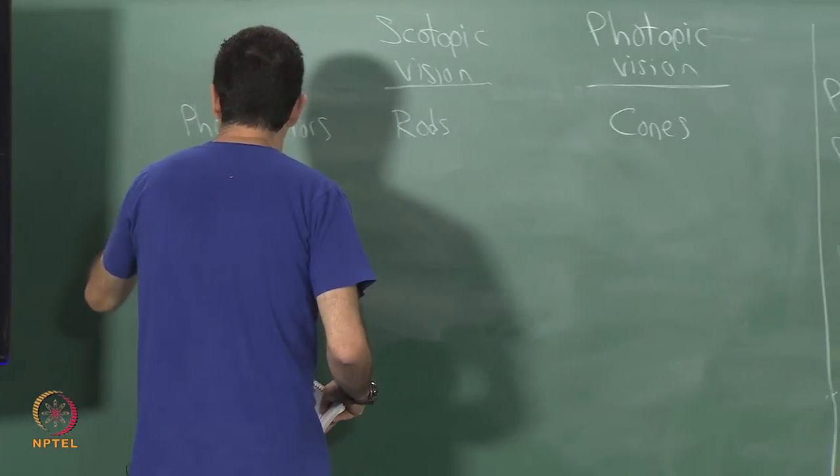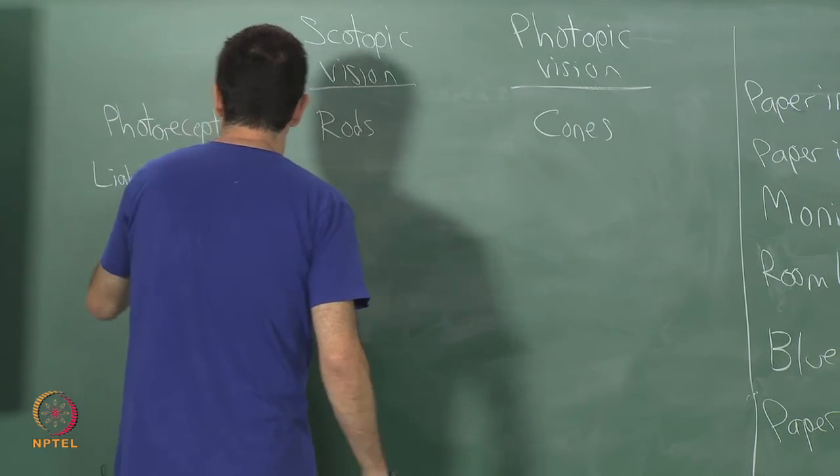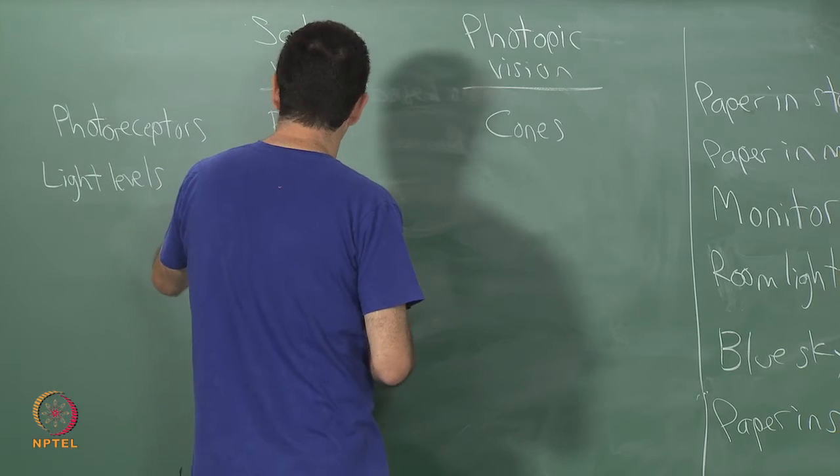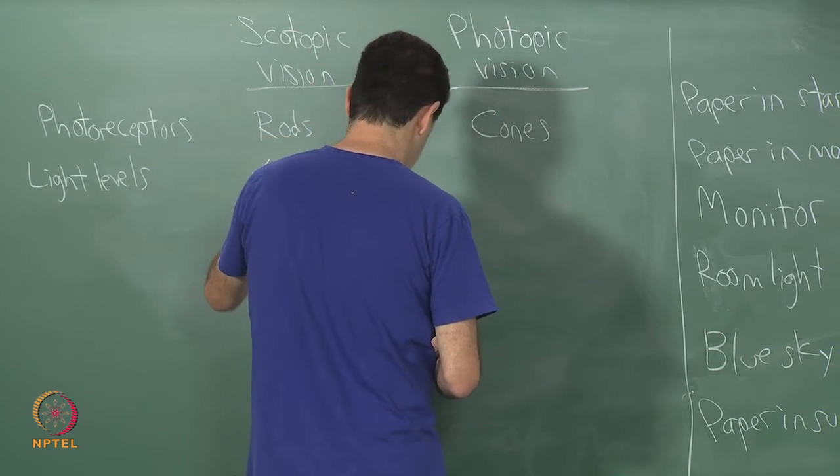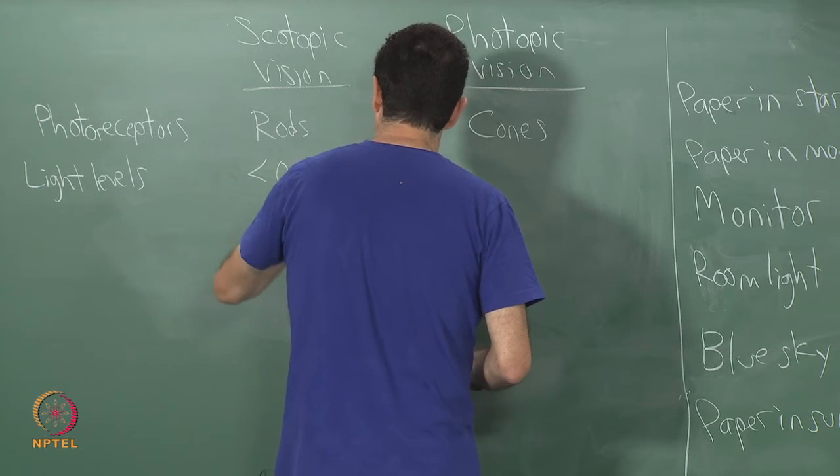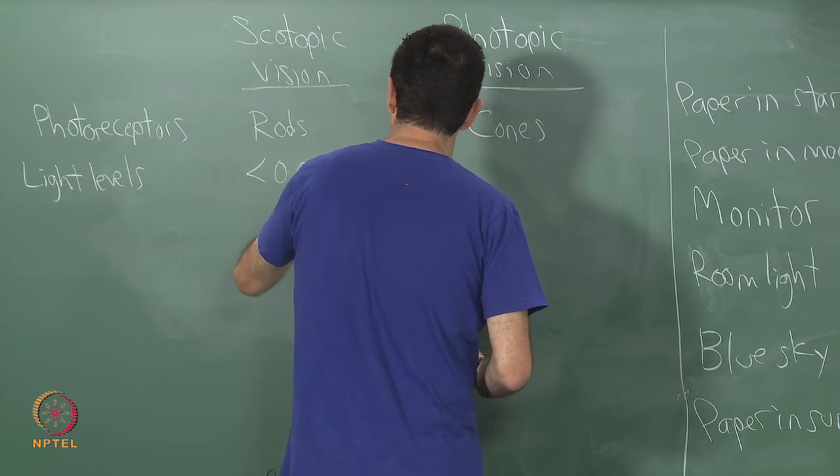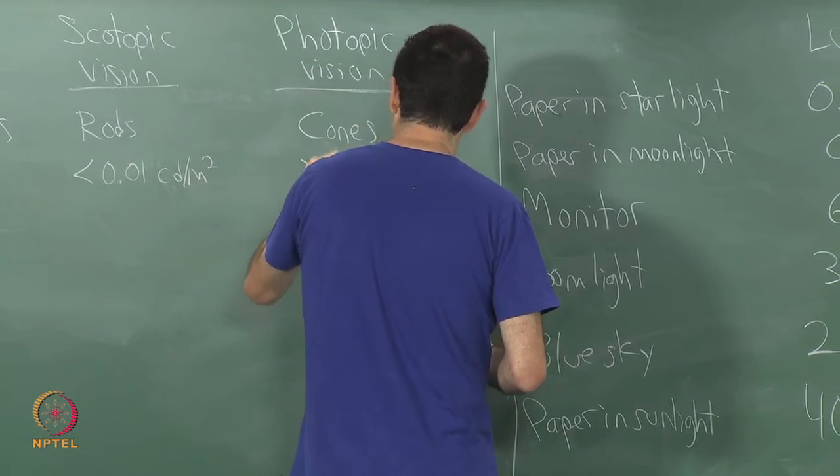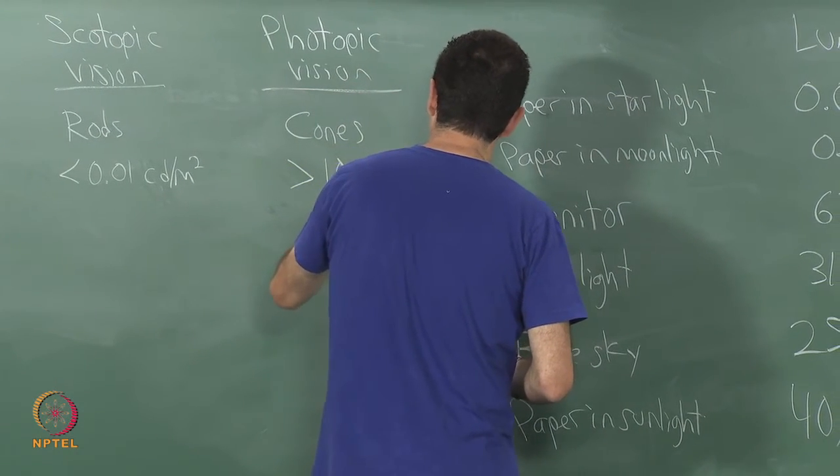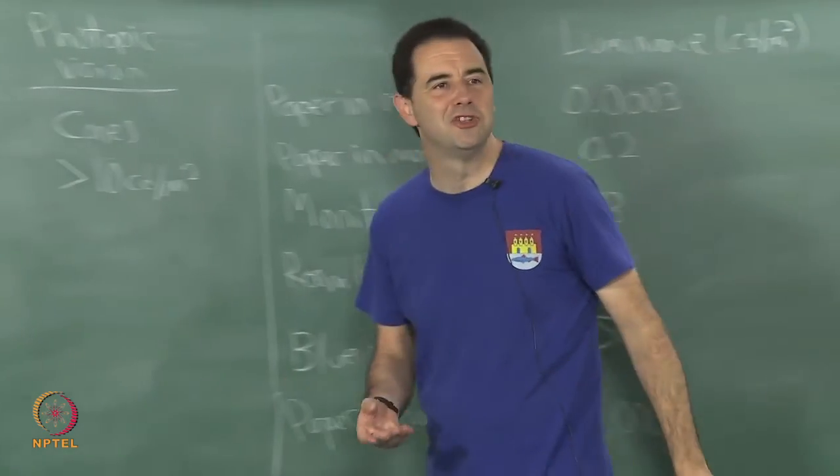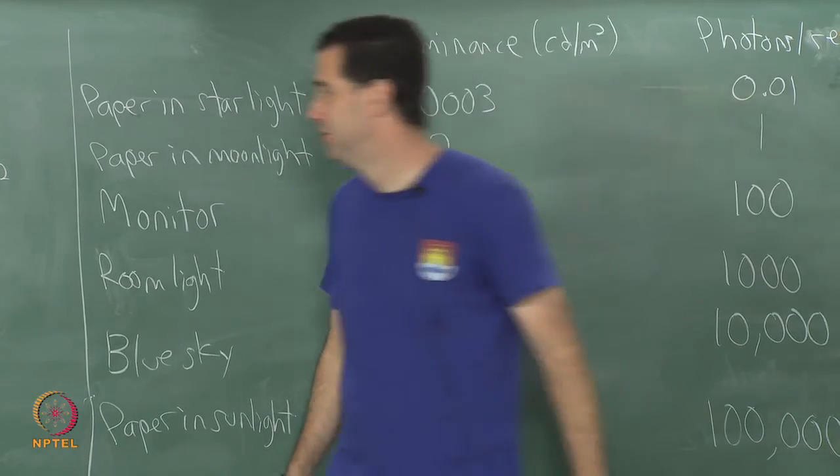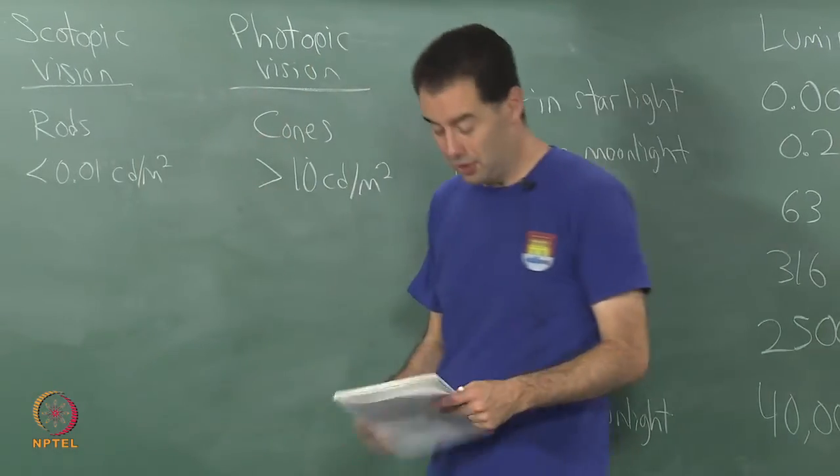For light levels, typical light levels for scotopic vision are less than 0.01 candelas per meter squared, and photopic is greater than 10 candelas per meter squared. Of course, there is some intermediate region, so there is a gradual transition from one to the other in actuality, but the extremes are very clear what is going on.